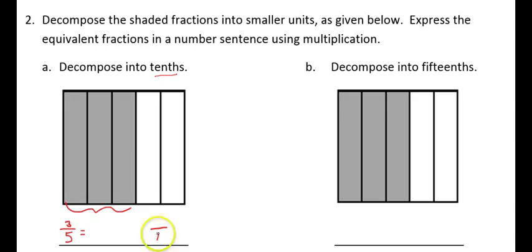If I need to turn this into tenths, I have to ask myself, how many rows will I need to turn the fifths into tenths? Well, since 5 times 2 equals 10, that tells me I need 2 rows. Now, instead of having 5 pieces that make up the whole, I have 10. And, instead of having 3 pieces shaded, I doubled that amount, and I now have 6 pieces shaded. That tells me 3 fifths is equivalent to 6 tenths.